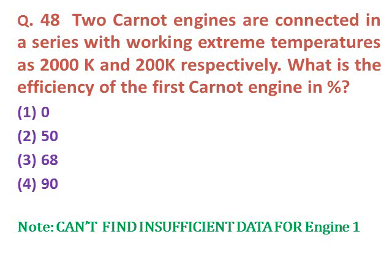Question forty-eight: Two Carnot engines are connected in series with extreme working temperatures of 2000 K and 200 K respectively. What is the efficiency of the first Carnot engine in percentage? We cannot calculate the first Carnot engine's efficiency because the intermediate temperature is unknown — therefore the data is insufficient and this question is cancelled.